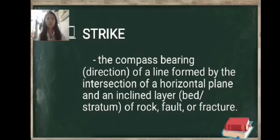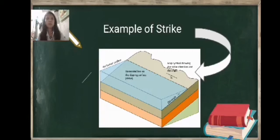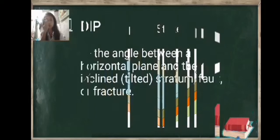Attitude is the orientation of a rock unit or surface. Strike is the compass bearing or direction of a line formed by the intersection of a horizontal plane and an inclined layer or bed stratum of rock, fold, or fracture. Example of a fracture. You can see the horizontal line on the dipping surface. That is what we call strike.